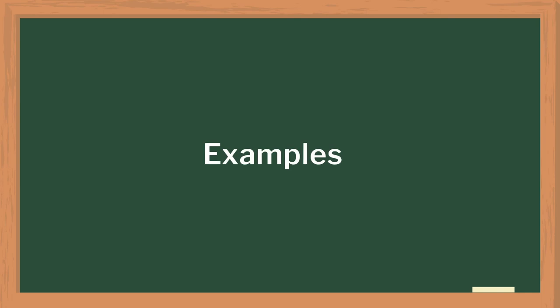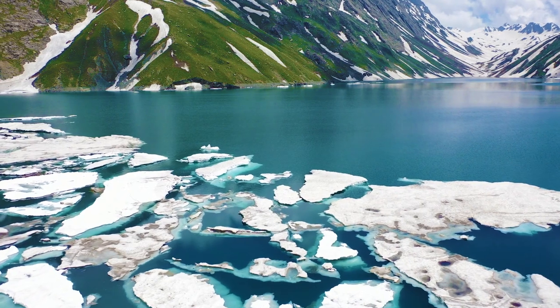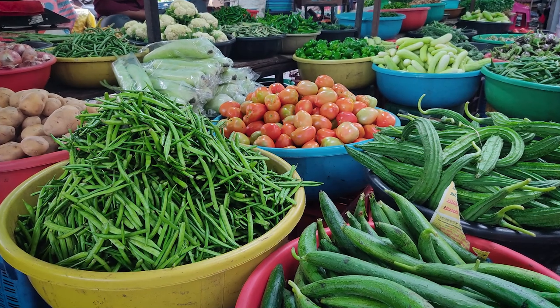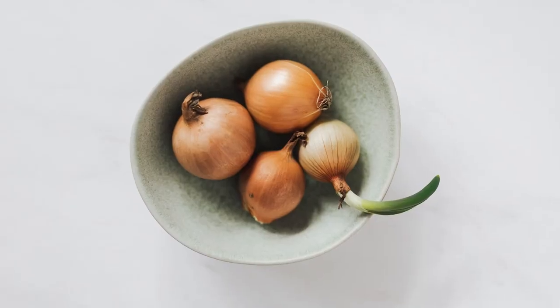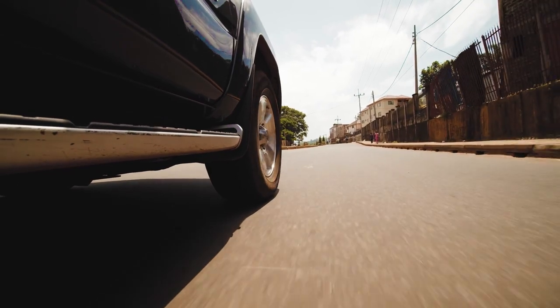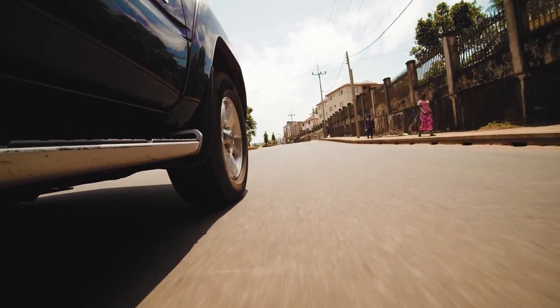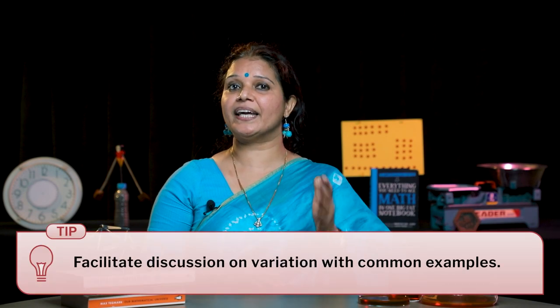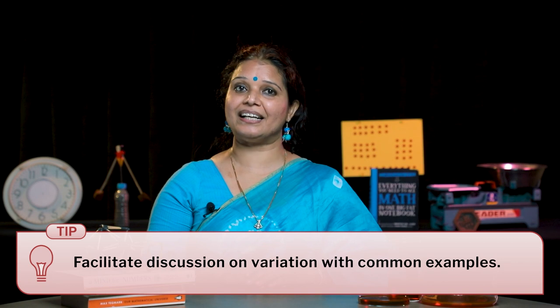For this session, I took these examples: What happens to the mass of a glacier in rising temperature? Or if the price of grocery items like onion increases, what happens to the quantity in the market? Or if a vehicle increases its speed, what happens to the distance it can cover in an hour? It was truly enriching to see my students were already aware of the effect of one quantity on the other. I facilitated them by giving the mathematical term for it — variation.